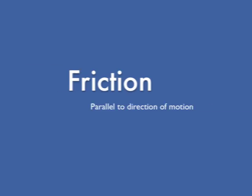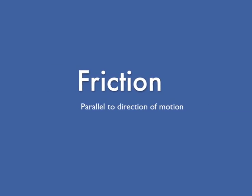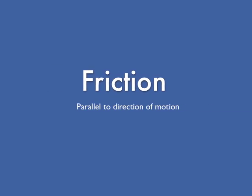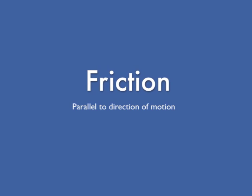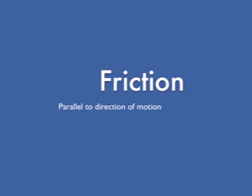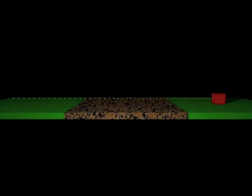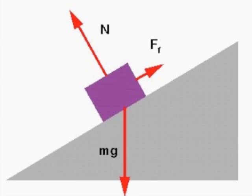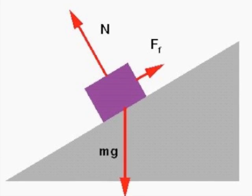Friction is a force that slows things down. Friction is parallel to the ground, between the surfaces during the ride, opposite to the way things slide.